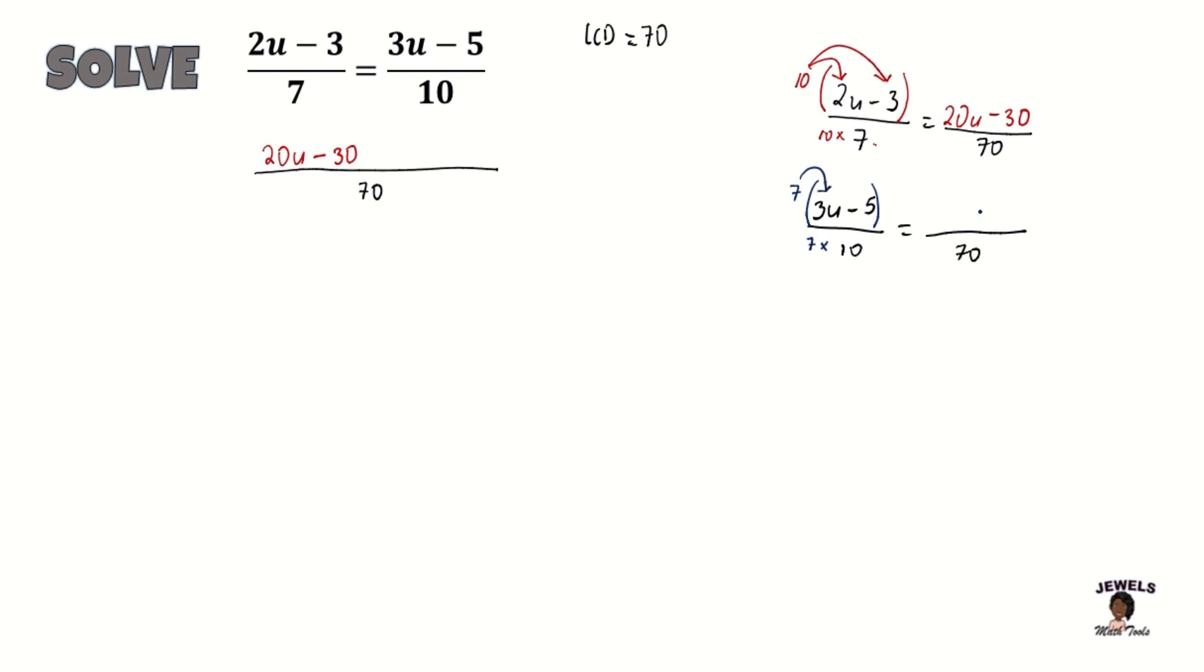So 7 times 3u will equal 21u, and 7 times negative 5 will equal negative 35. So our equation is now equal to 21u minus 35 over 70.